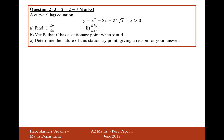A curve C has equation y equals x squared minus 2x minus 24 square root of x. Find part 1, the first differential, and part 2, the second differential.